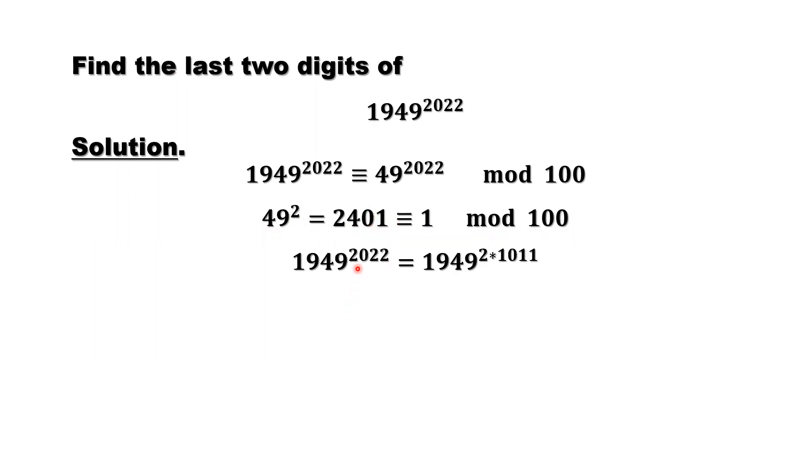So here, we can group the power 2022 as 2 times 1011. That means each two as a group. How many groups? That's 1011.